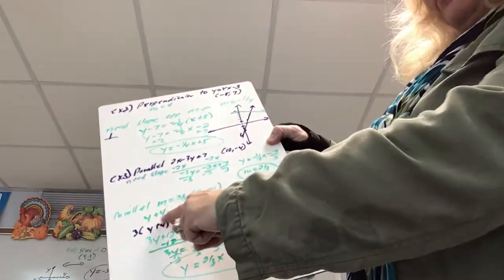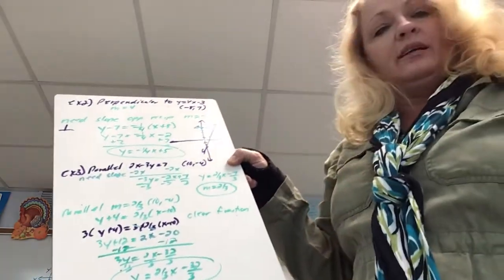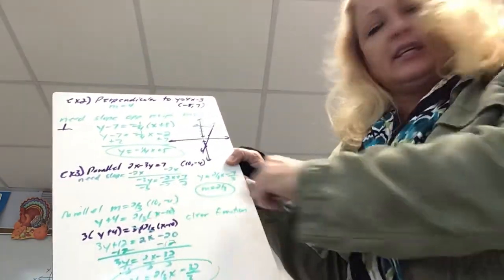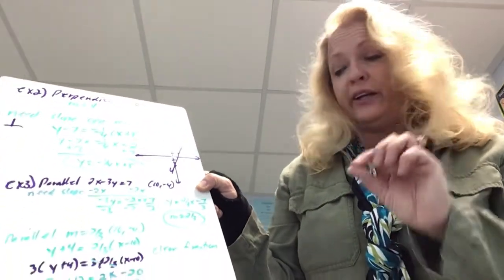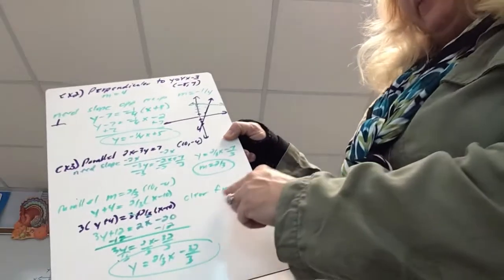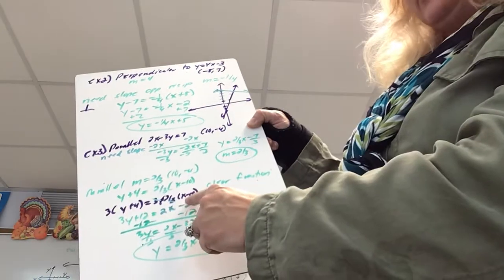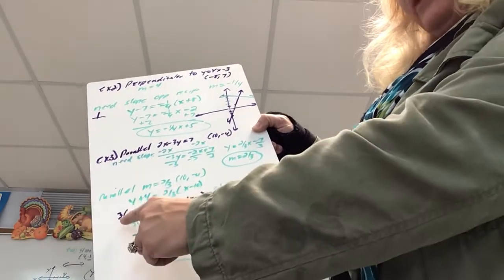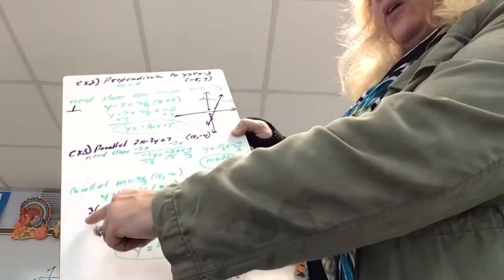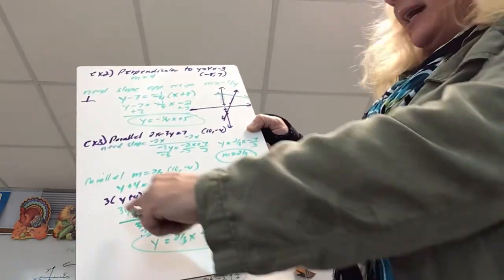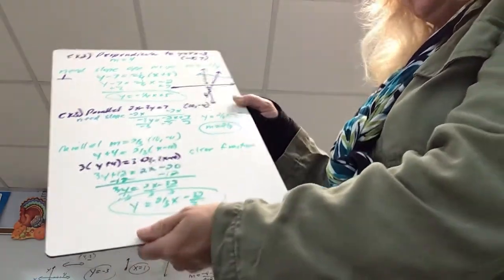So I have y plus 4 equals two-thirds times x minus 10. If I distribute, this isn't going to turn out nicely — I'll get a bunch of fractions. So this is where I would encourage you to clear your fraction. That means getting rid of the 3 by multiplying both sides by 3. These 3's reduce and I have to distribute all the way — 3 times y plus 4, giving 3y plus 12.